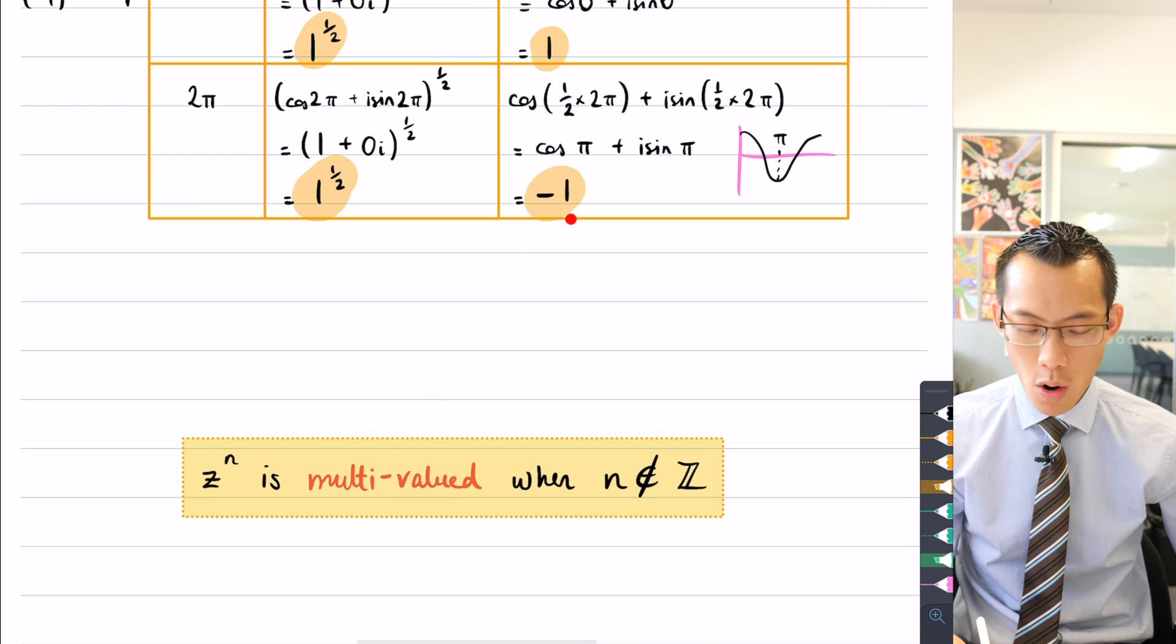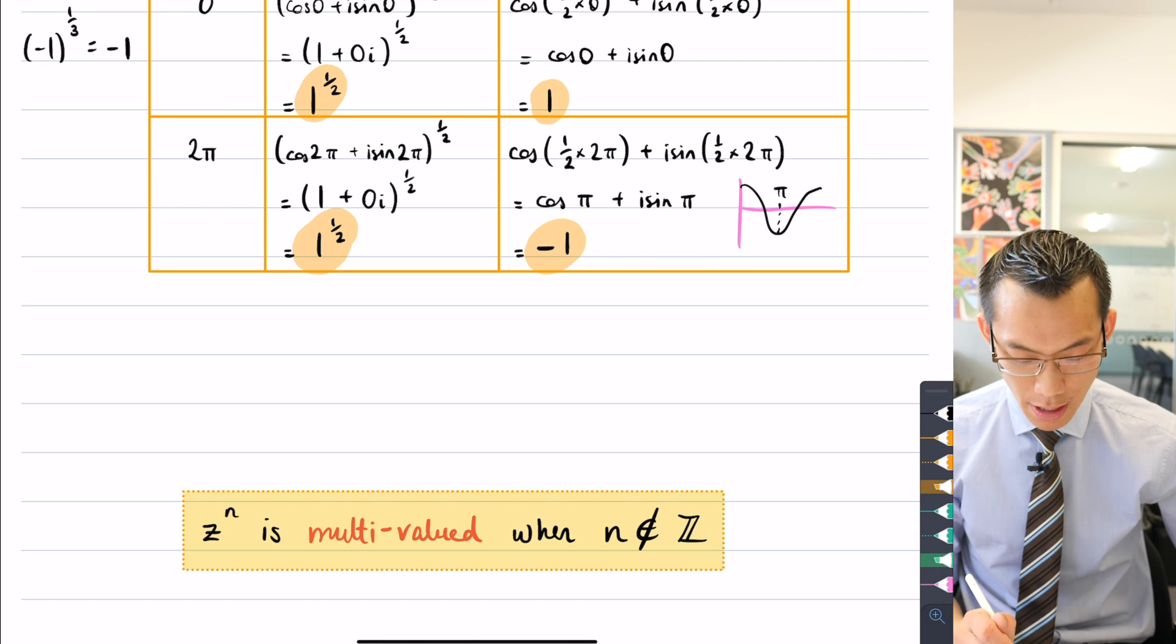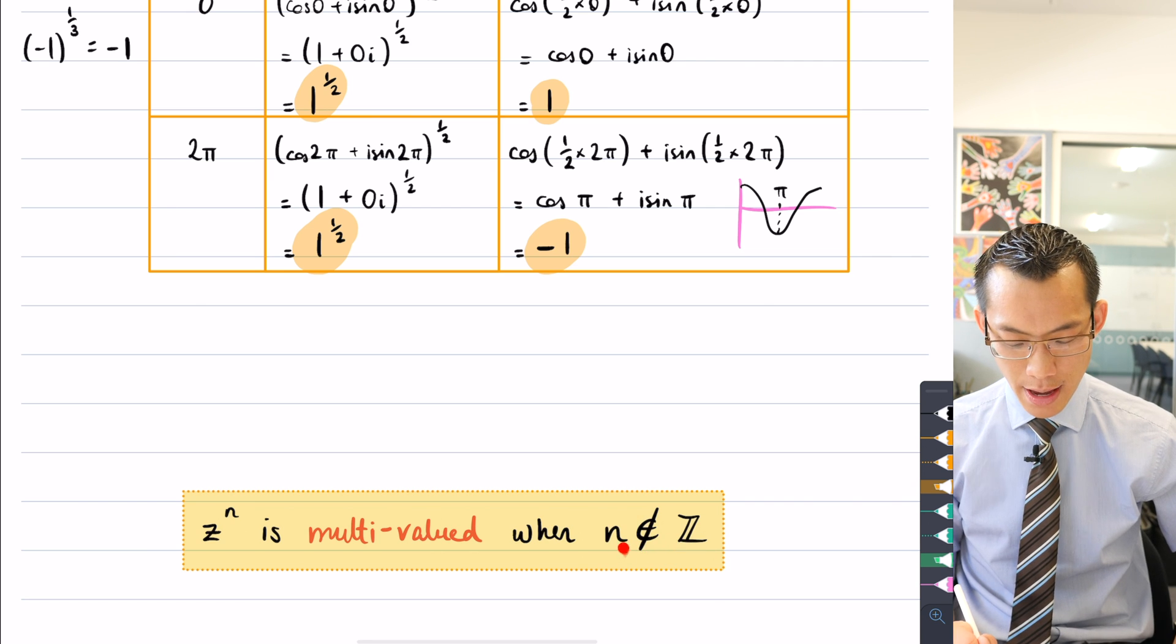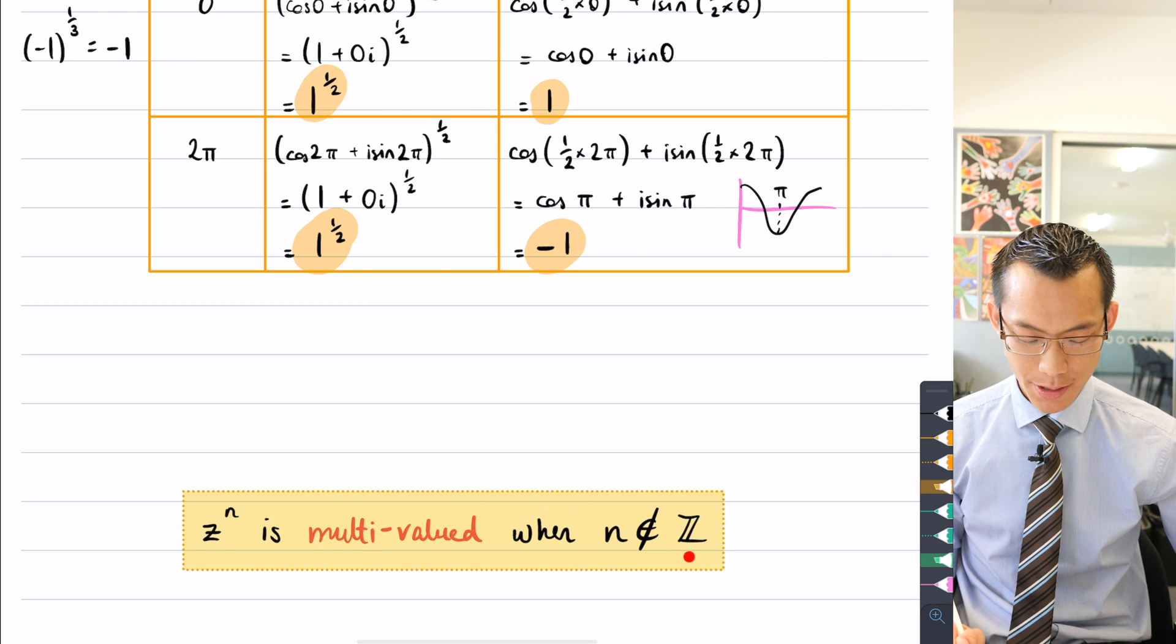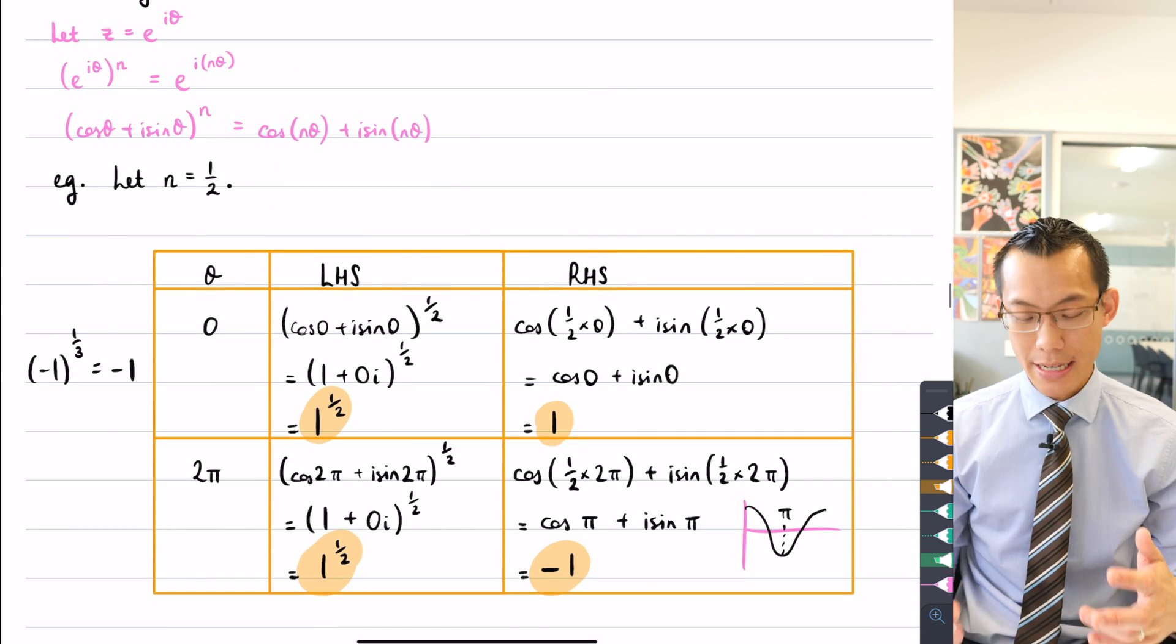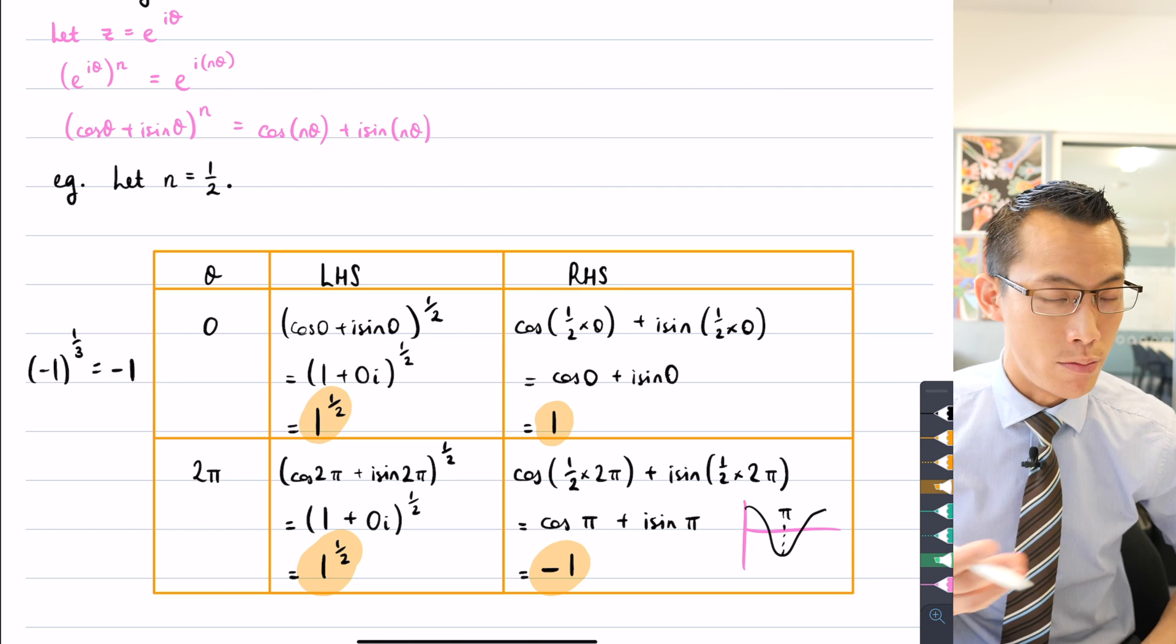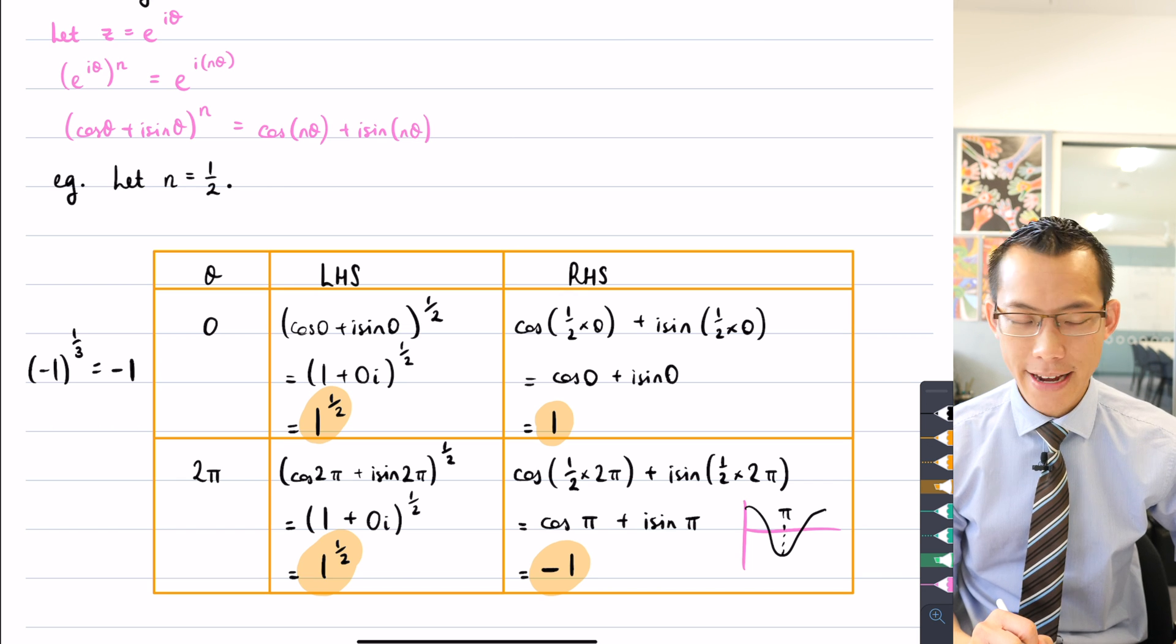z to the n is multi-valued. You've got one and negative one. Or, you know, when we think about one to the power of a third, you get the cube roots of unity. So there are multiple values because in that case, a third, it's not an integer. And that's what this fancy notation here means. n is not an element of the set of whole numbers, the set of integers. So this is weird. And this causes a problem for de Moivre's theorem. De Moivre's theorem breaks down when you put in even something as simple as n equals a half, which is why all the exercises you've ever dealt with that use de Moivre's theorem, they always hand you integer values because that's kind of where you have to stay.